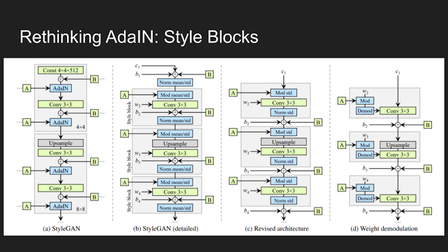AdaIN takes a feature map, normalizes it, then rescales the feature map based on a style vector with scaling values for each feature map. In this paper they define this as first demodulating a feature map then modulating the feature map with a given style.